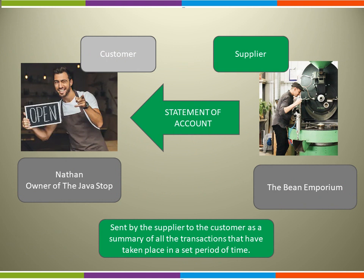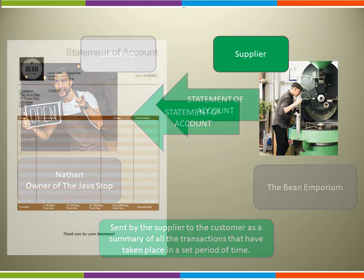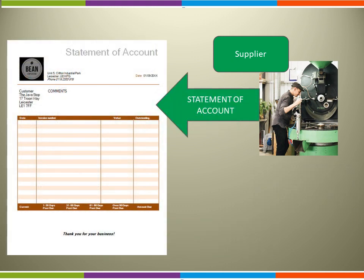A statement of account is sent from the supplier to the customer. It is a summary of all the transactions that have taken place in a set period of time — maybe a month, a quarter or a year. A statement of account will list all of the transactions that have taken place in a time period. It will show the date of the transaction, the details — was it an invoice, a payment, a credit note — the value, and it will also calculate the amount that is due, the amount that is outstanding from the customer at the end of that time period.